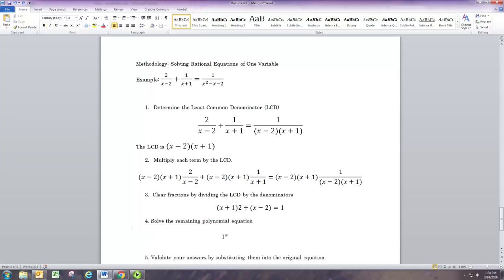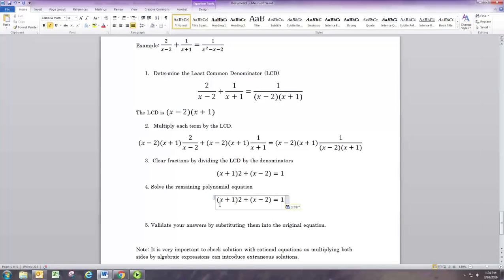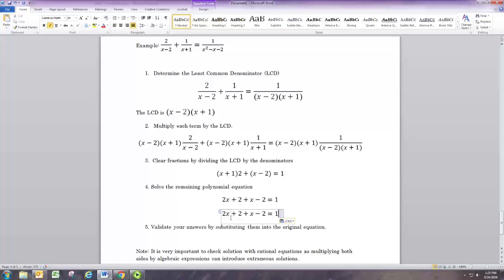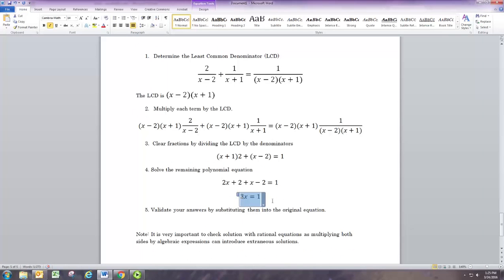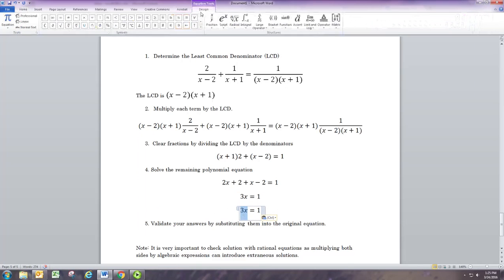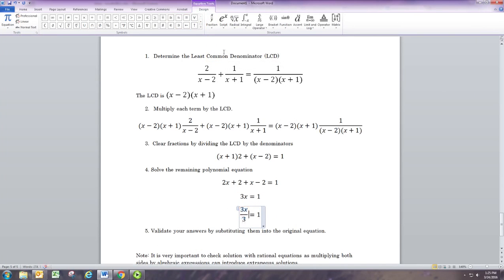You got a polynomial equation. It's again linear. So we're going to want to distribute to clear parentheses. We can do 2x plus 2, and the second one is just x minus 2. At that point, we can combine like terms. 2x plus x is 3x, and 2 minus 2 is 0.